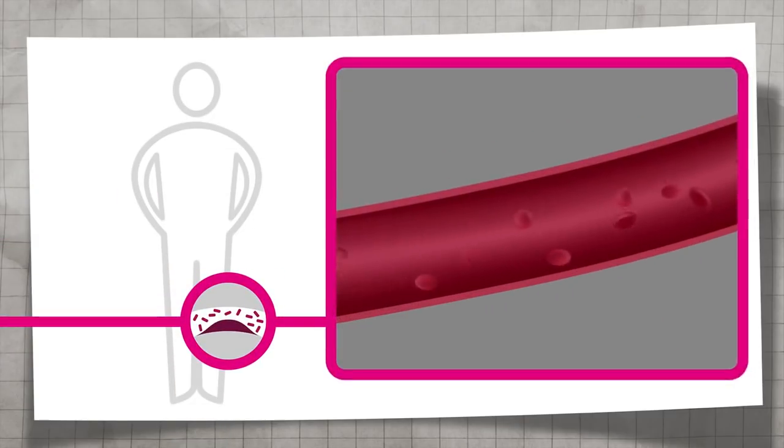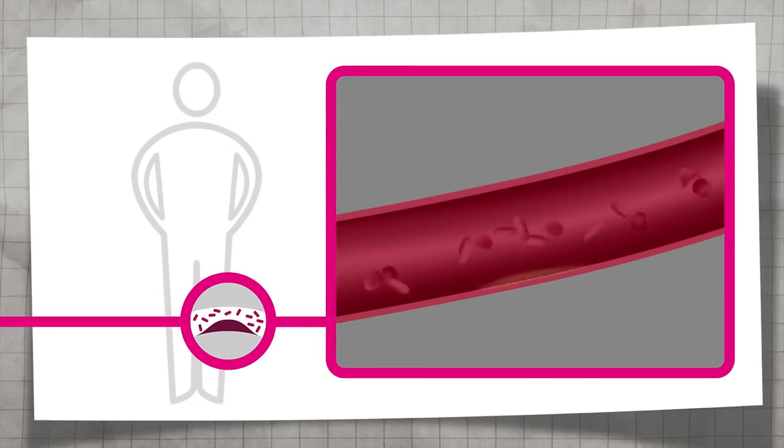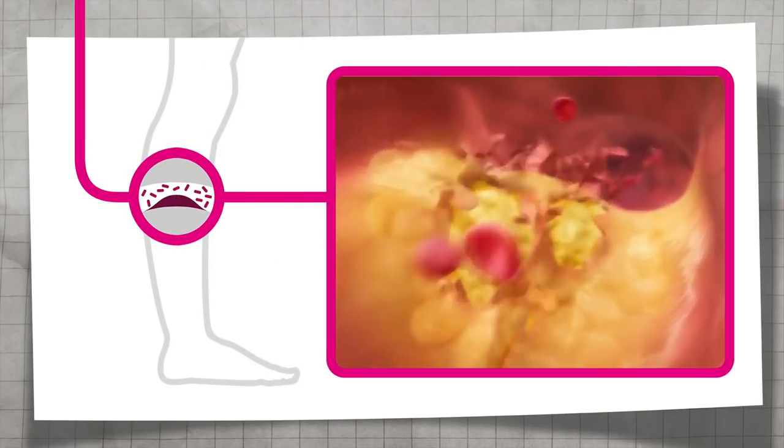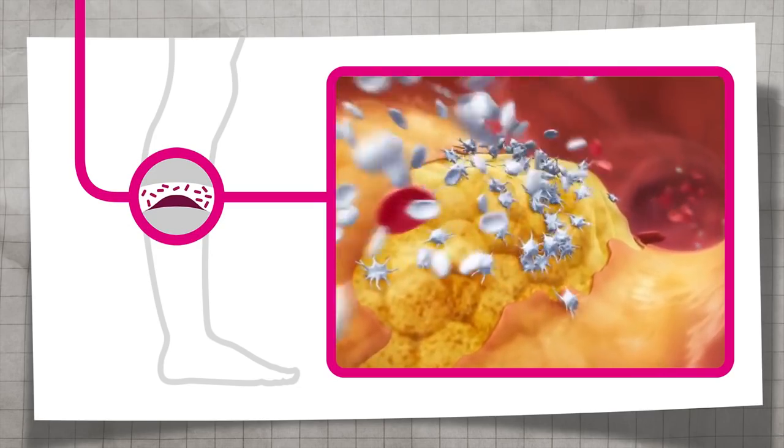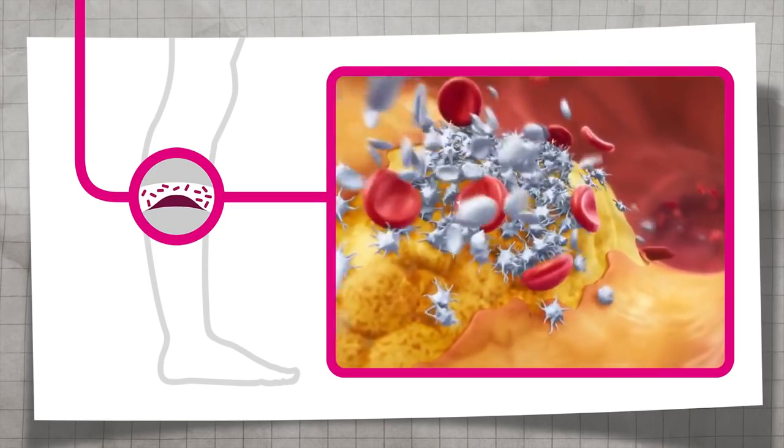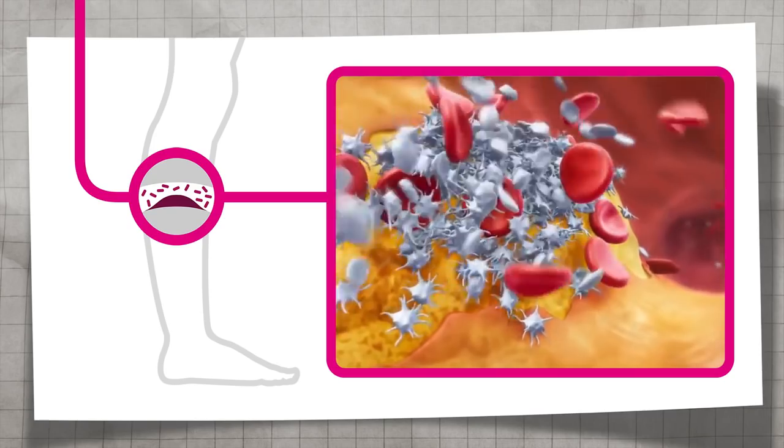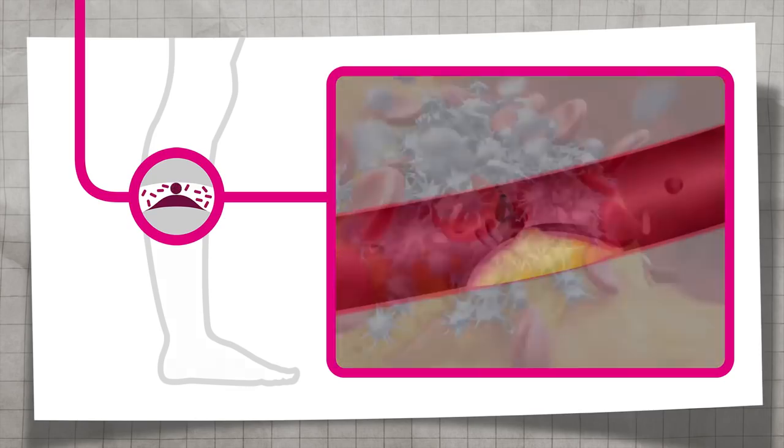PAD is a progressive condition caused by the formation of atherosclerotic plaques in the peripheral arteries, reducing blood flow and in some cases causing pain. The rupture of one of these plaques triggers platelet activation and factor XA-mediated thrombin generation, leading to the formation of a blood clot, a process known as atherothrombosis.